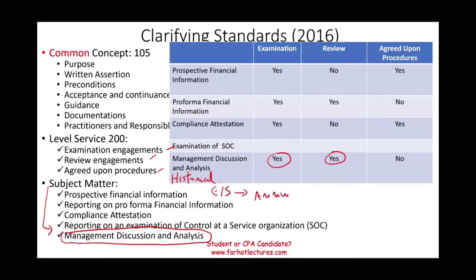MD&A is part of the annual report, and the annual report is part of the historical financial statements. Just like pro forma financial information, we can carry on an examination and a review, because pro forma also relates to the historical — we look at historical figures and make some adjustments. Same thing with MD&A: it's based on historical financial statements.